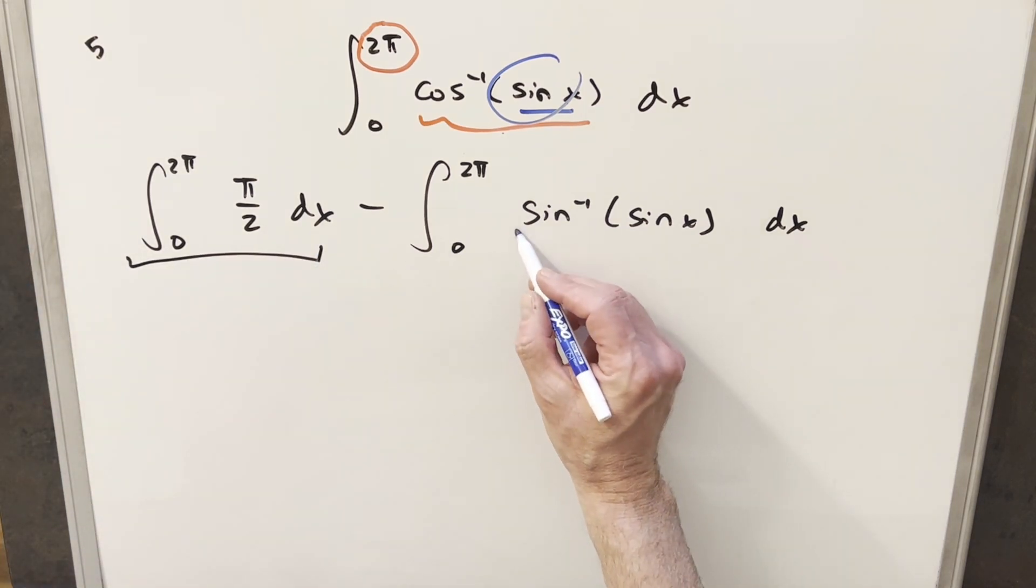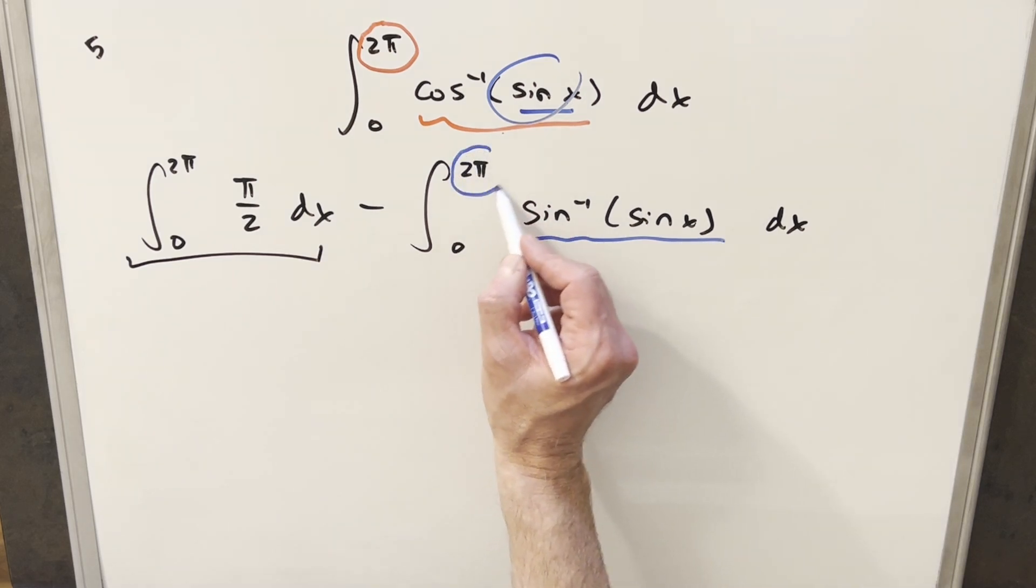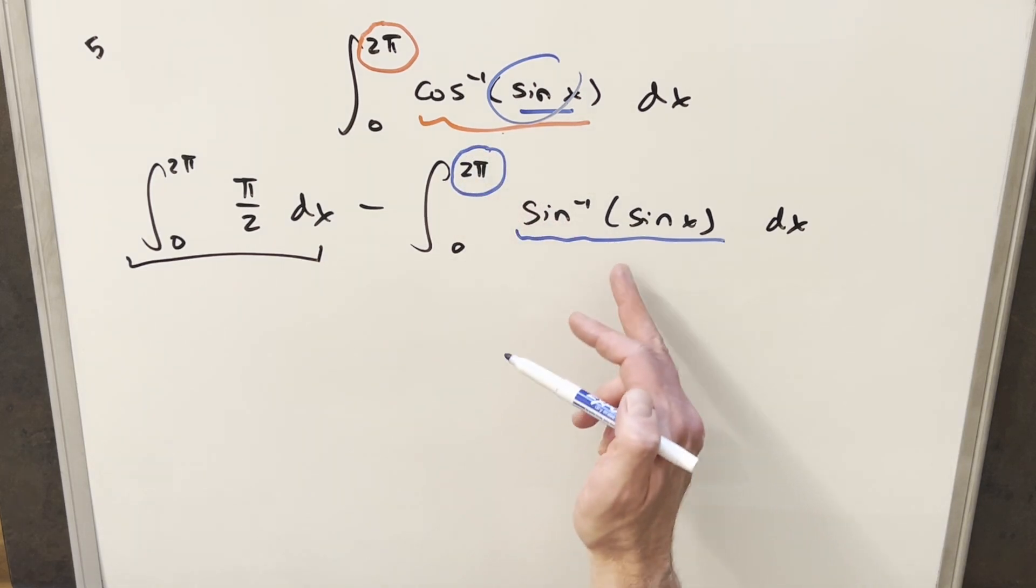Focusing on this second one, again, this would be x, but we still have a problem with our bounds because in the region from zero to two pi, it's not always going to be x. We do have the option where we could just break this up into I think three or four integrals. I always find that kind of messy. So I try to manipulate this a different way.